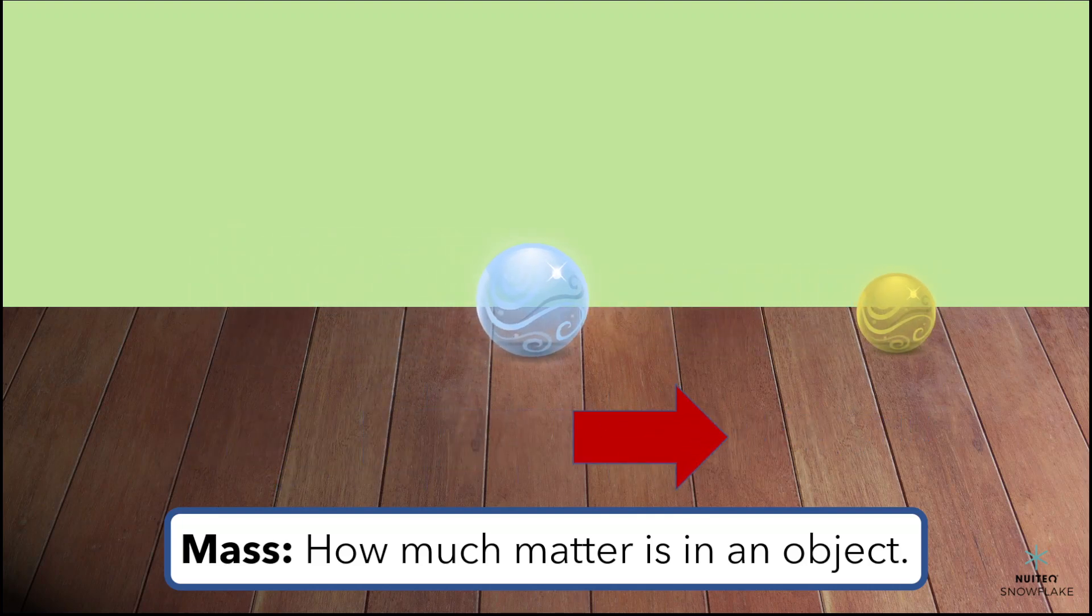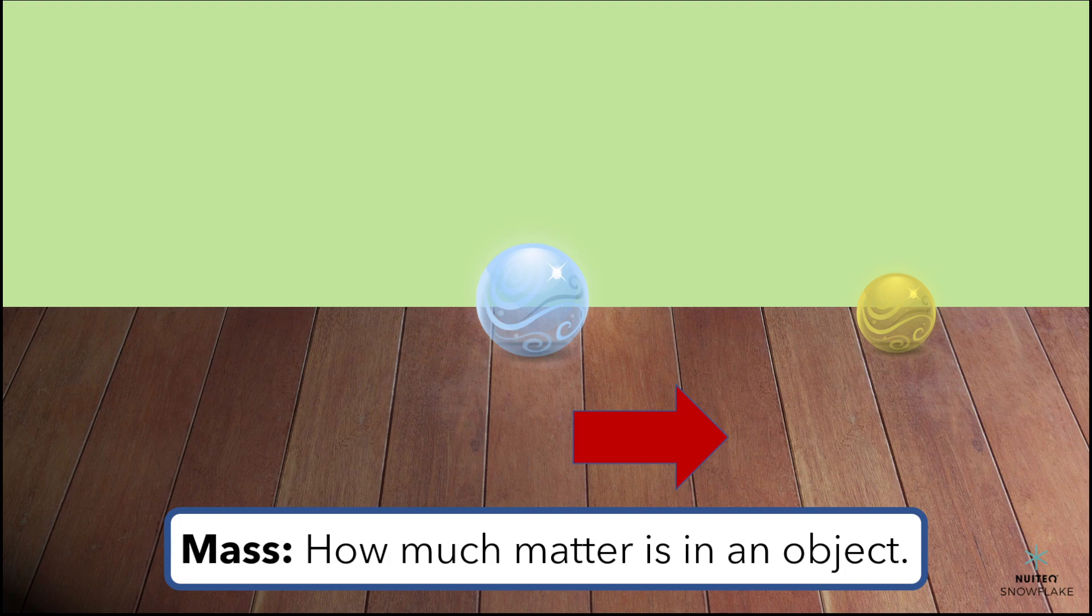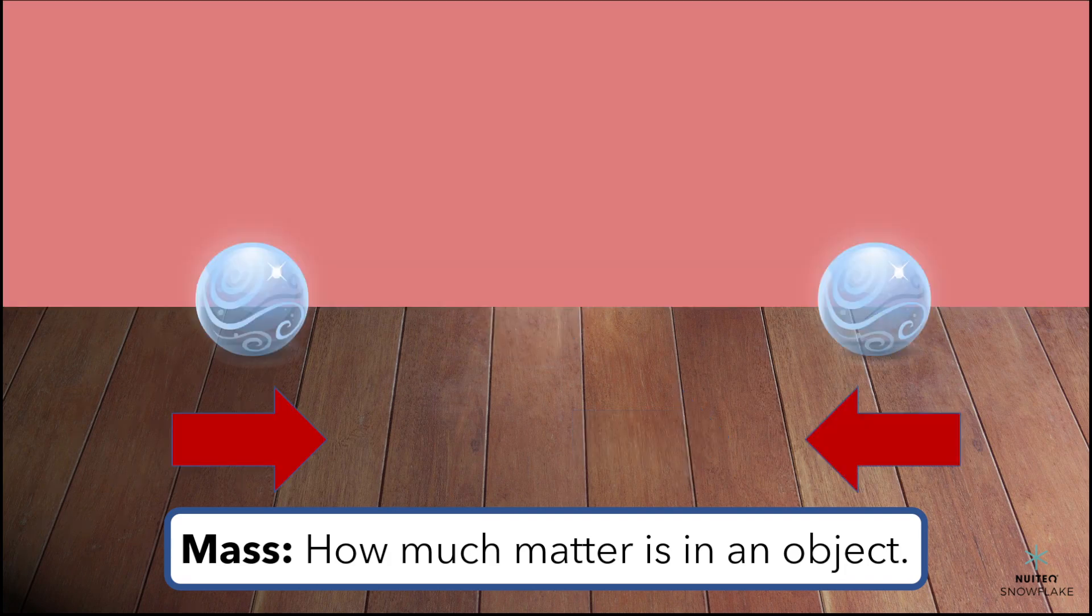This means that when the two marbles collide, the big marble will transfer more energy to the small marble than vice versa. So when the big and small marbles collide, the small marble will speed up and the big marble will slow down.